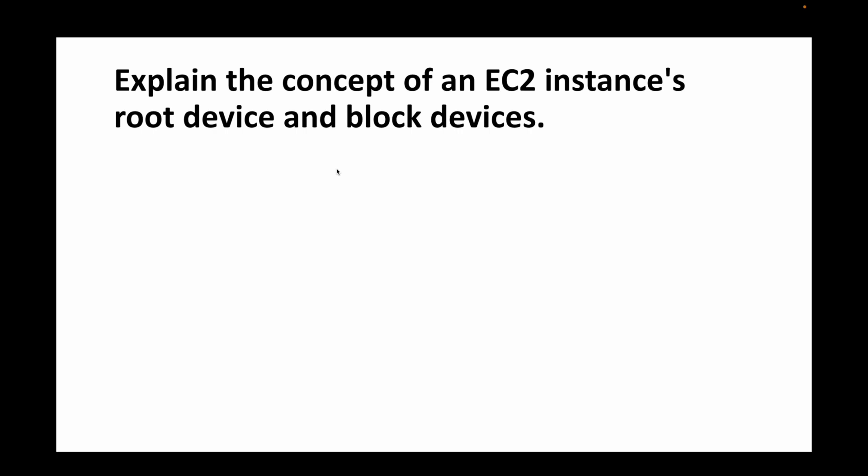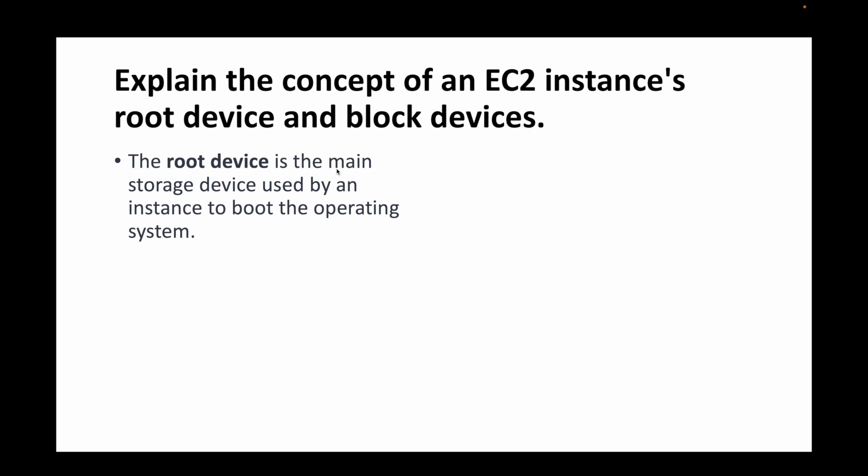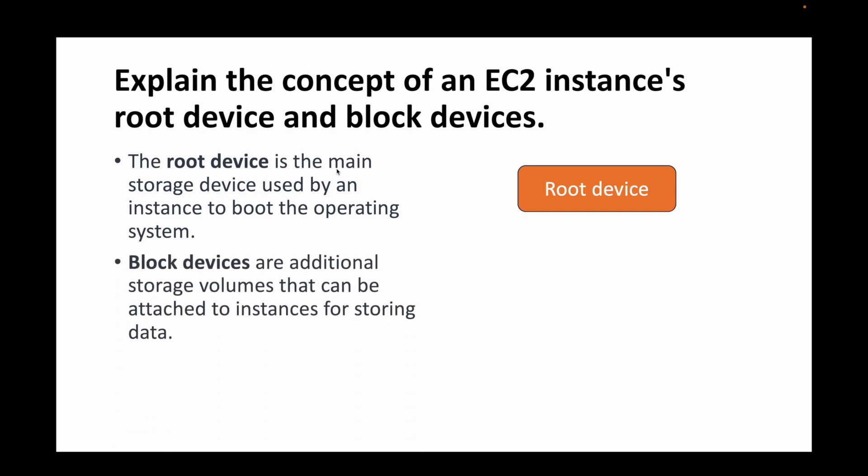The next question is: explain the concept of an EC2 instance's root device and block devices. When you launch an EC2 instance, you have a root device and block devices. The root device is the main storage device used to boot the operating system — it's where OS-related data is stored, similar to the C drive on a Windows machine. Block devices are any additional storage volumes attached to your EC2 instance for storing data. By default, the volume attached to your instance is the root device, and any additional volumes you attach are block devices.